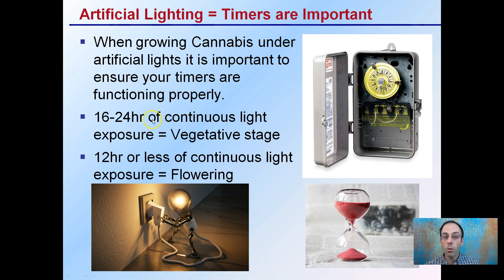16 to 24 hours of continuous light exposure will allow the vegetative state to continue. 12 hours or less of continual light exposure will induce flowering in your plants.